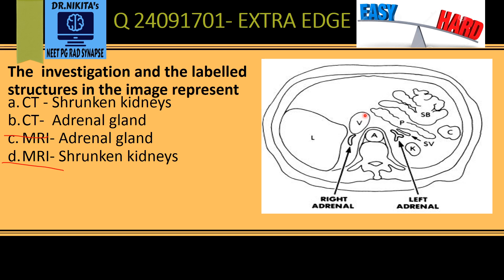To the right of the aorta is the IVC. Just posterior to that is the right adrenal gland, and we have the left adrenal gland here. The adrenal can look like a linear structure like this, or it can have an inverted Y-shaped structure like this.